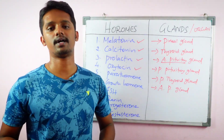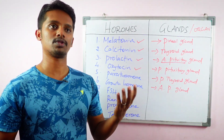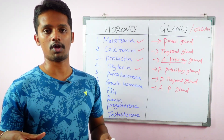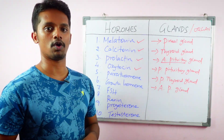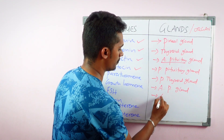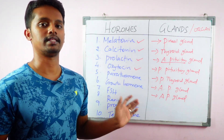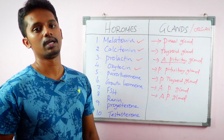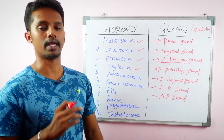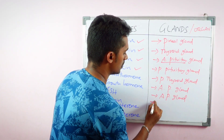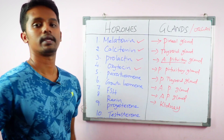So the Anterior pituitary gland secretes multiple hormones including Prolactin and Growth Hormone. The seventh one is FSH — Follicle Stimulating Hormone — also secreted by the Anterior pituitary gland. Renin is a different hormone secreted by the Kidney.